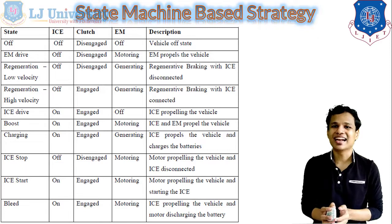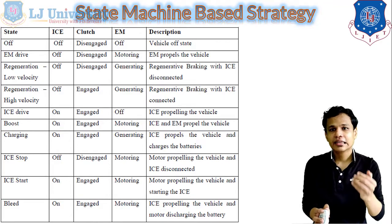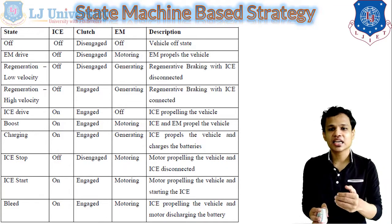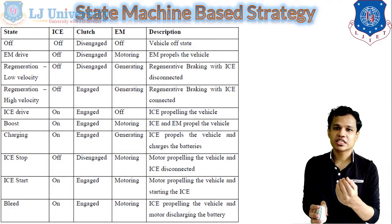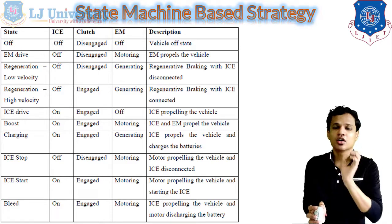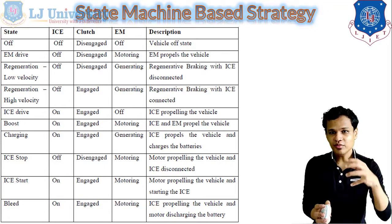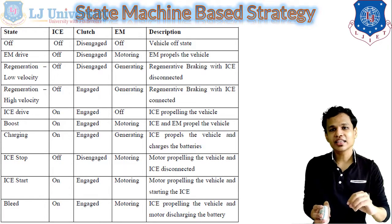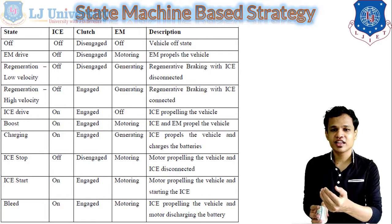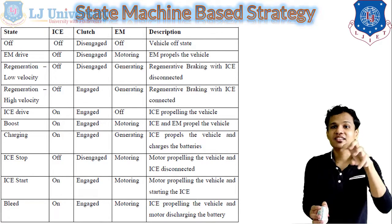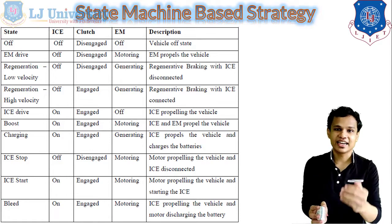Next is the state machine-based strategy. One state will be defined for the vehicle, and for that state, different operations will be assigned to our IC engine, clutch, and motor. In the off state, the engine stays off, clutch is disengaged, and motor stays off. In the EM drive state, the engine is off, clutch is disengaged, and the EM works as a motor to propel the vehicle. In regeneration at low velocity, the IC engine stays off, clutch is disengaged, and the EM works as a generator — providing regenerative braking with IC engine disconnected.